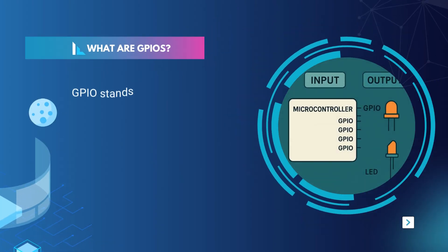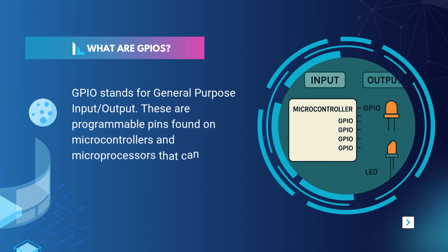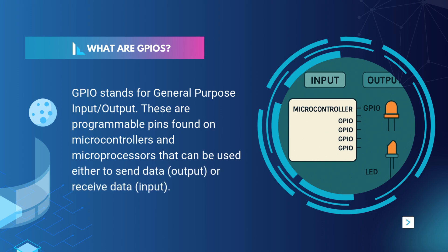GPIO stands for General Purpose Input-Output. These are programmable pins found on microcontrollers and microprocessors that can be used either to send data (output) or receive data (input). They are like the eyes, ears, and hands of your microcontroller, letting it interact with sensors, LEDs, motors, switches, and more.